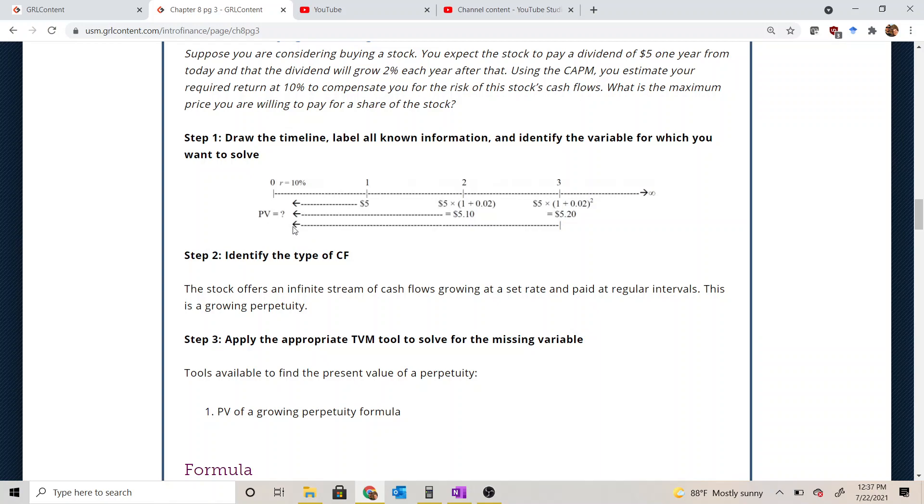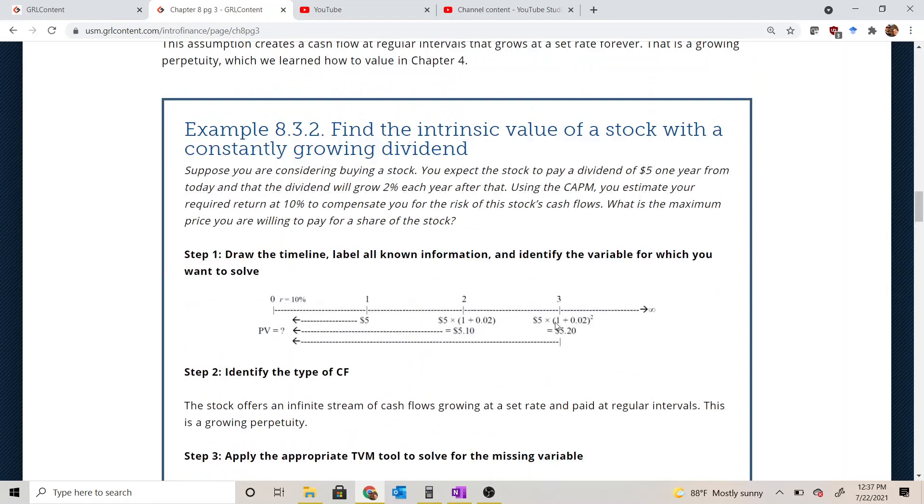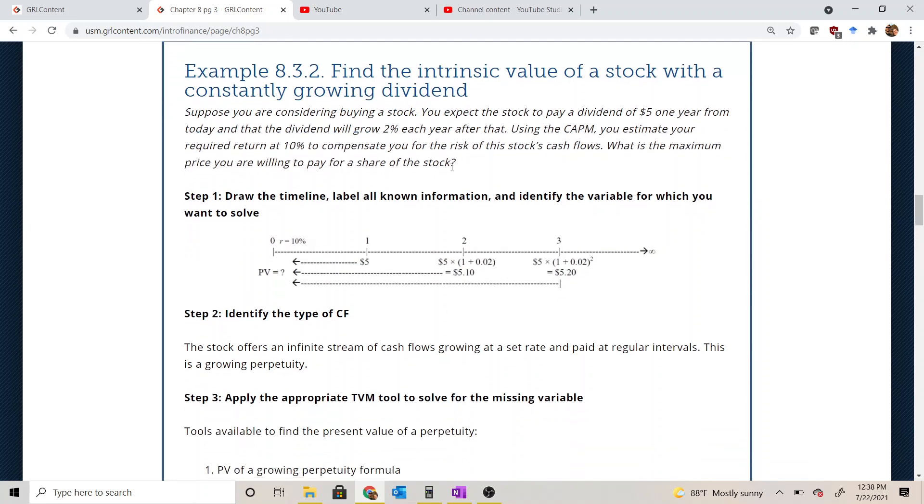If we paid anything more than $62.50 today, right now, and then still receive these same cash flows, our rate of return would be lower than 10%, and it wouldn't be enough to compensate us for the risk associated with that investment. If we were to pay anything less than $62.50 for that share of stock today, then our rate of return would be greater than 10%, and it would be even more attractive to us because it would more than compensate us for the risk.